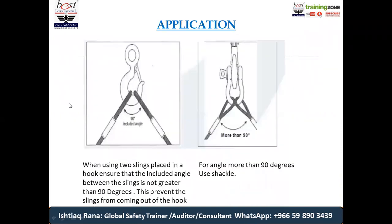When using two slings, place them such that the included angle between the slings is not greater than 90 degrees. More than 90 degrees means the practice is unsafe. Similarly, if the angle is below 30 degrees, it is also unsafe — it creates more stress at the connection point. The angle must be more than 30 and less than or equal to 90 degrees. On the floor, terrible practices are observed: nobody cares about these angles, everyone just wants to take shortcuts and show heroism to their supervisor.